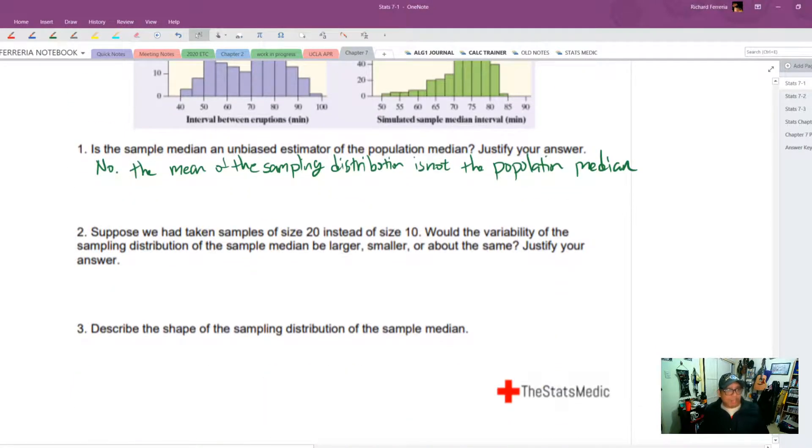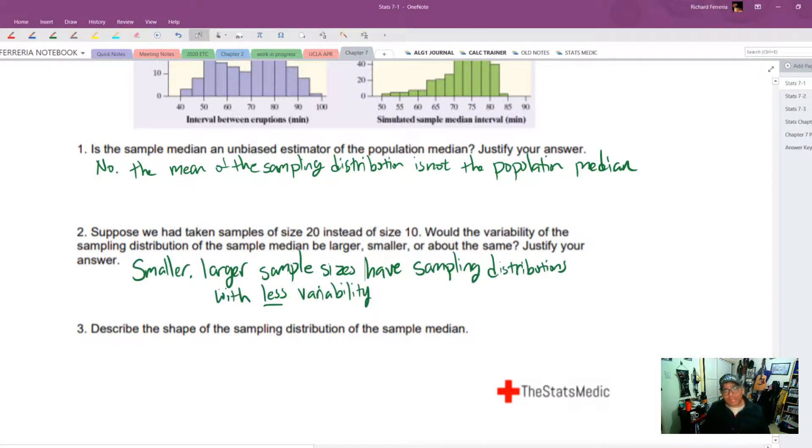Next, suppose we had taken 20 samples of size 20 instead of size 10. Would the variability of the sampling distribution of sample median be larger, smaller, or about the same? And it would be smaller. Larger sample sizes always have sampling distributions with less variability.